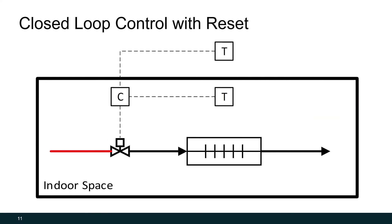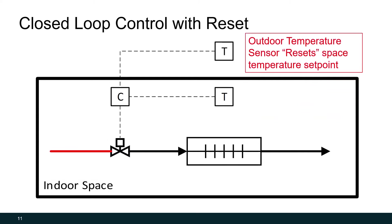In closed loop with reset, you'll notice that we have two sensors: one inside, which is our closed loop, and one outside, which is our open loop. That outdoor temperature sensor is going to reset our space temperature setpoint to be a bit warmer when it's hot outside. We'll have a future webinar discussing how we can use this reset strategy to save energy at different points in our building.